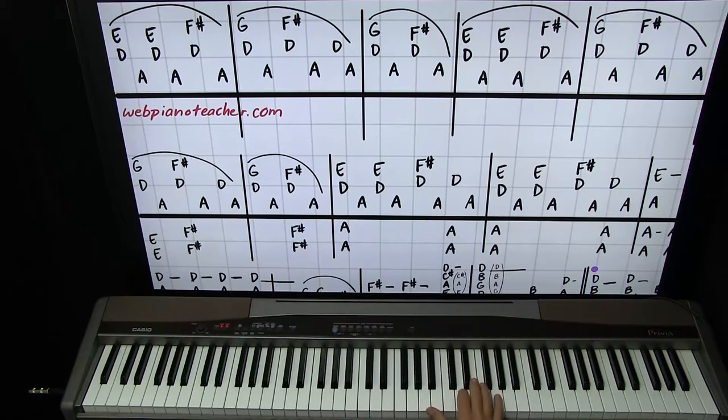And then D, G with 2 and 5 back to A, D, F sharp, A, D, A. So very dry, very exact. Practice it that way, and then you can speed it up as you learn it.